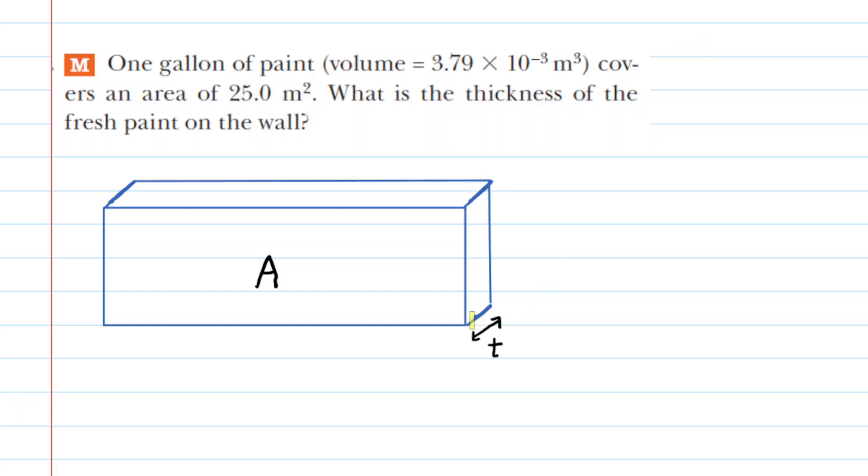In this question, we have to calculate the thickness of paint located on the wall. We've drawn a little schematic to represent the situation. We have the area of the wall marked with A, and then we've given the paint some thickness. It's a little bit exaggerated looking, but our goal is to find that thickness nonetheless.